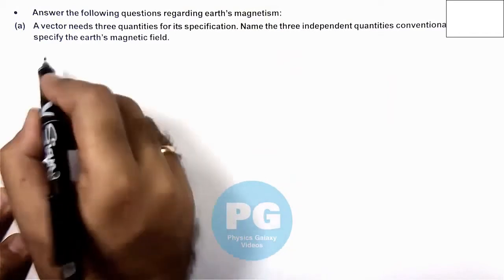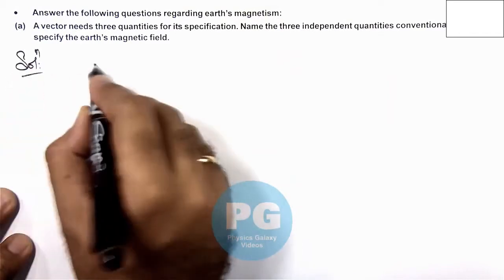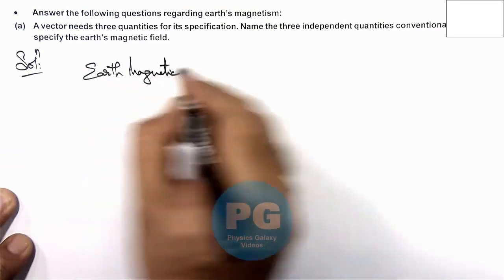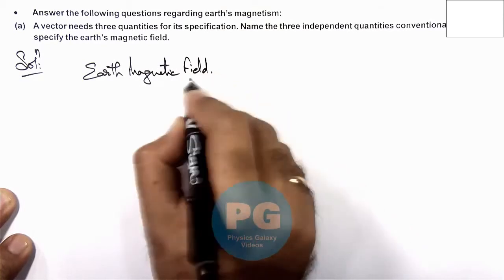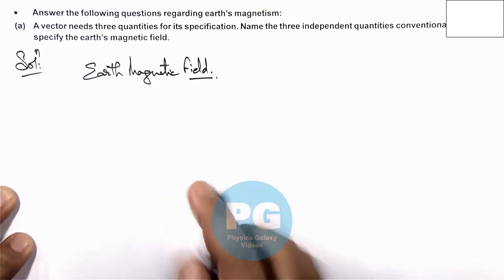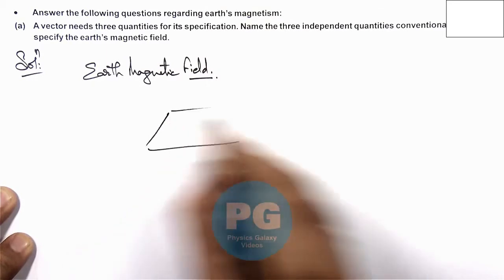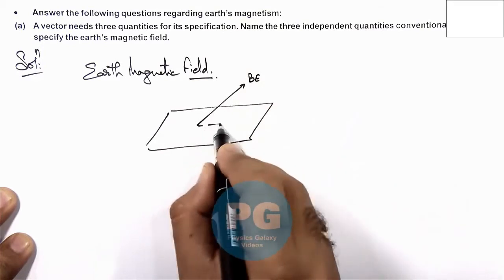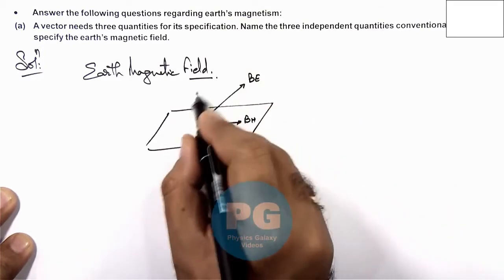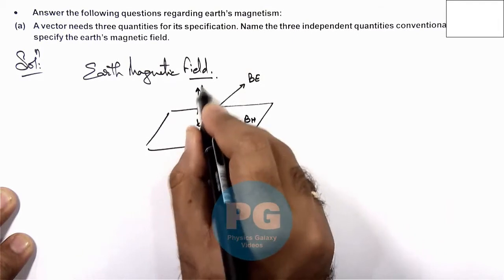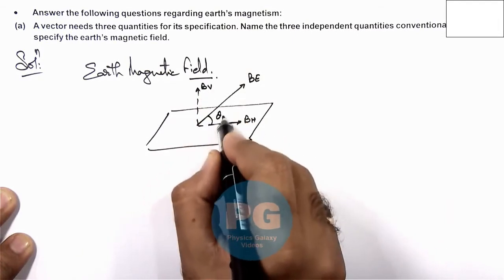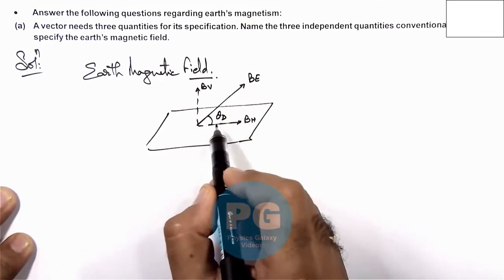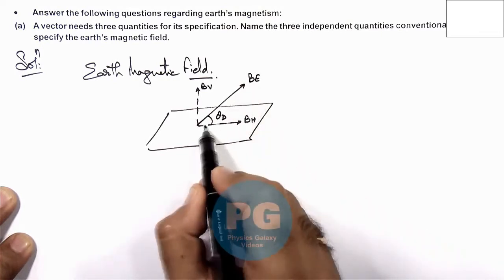When we talk about earth's magnetic field, we know well that in case of earth's magnetic field, if we wish to define its vector we need its magnitude as well as direction. On the horizontal plane, if this is earth's magnetic field, then this has one horizontal component called B-H, one vertical component B-V, and this angle of dip we call theta-D. This theta-D specifies the inclination of earth's magnetic field with respect to horizontal.